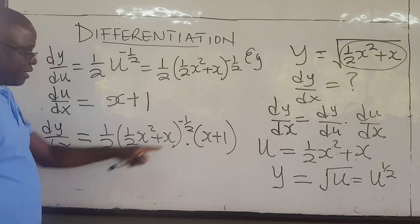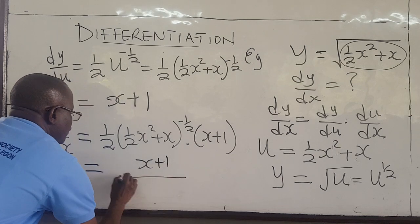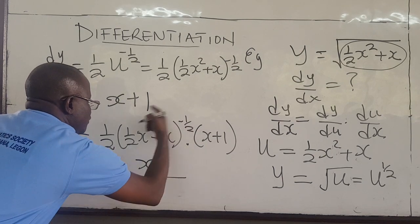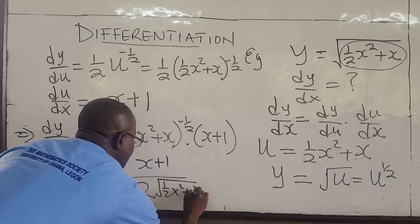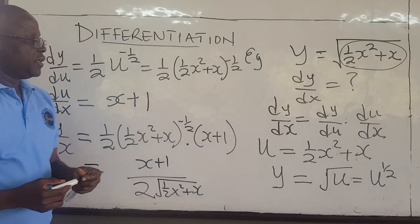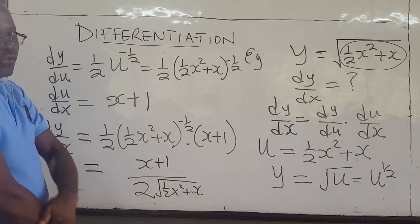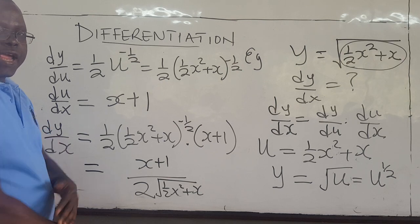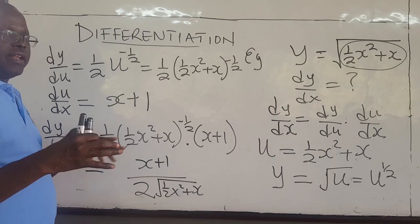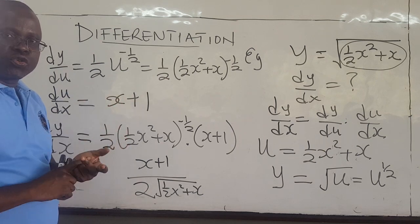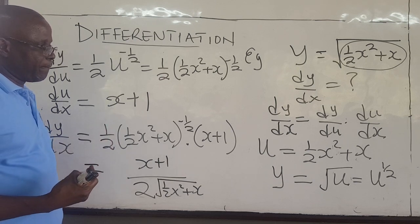You can rewrite this as x plus 1, all over 2 times the square root of 1.5x squared plus x. That is the chain rule. In the next video, what I'm going to do is write out a couple of common derivatives that you need to know. Then we'll apply the chain rule, the power rule, and the other rules to some functions to do some more examples.